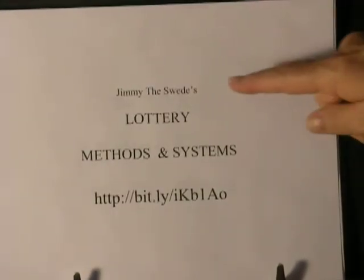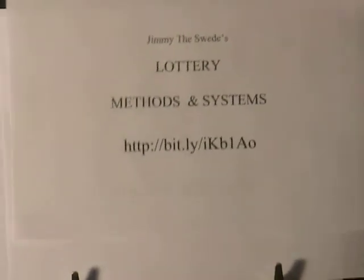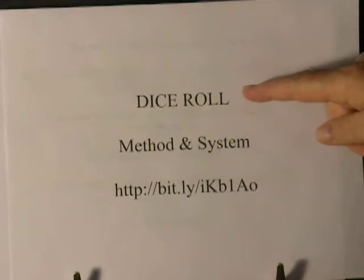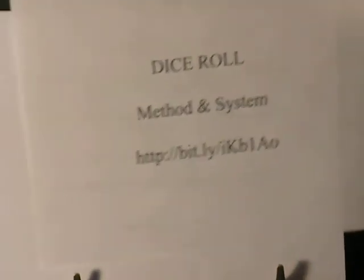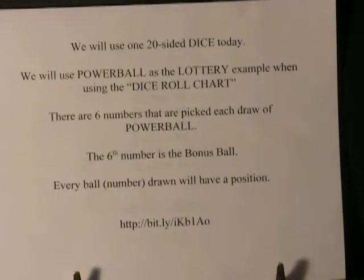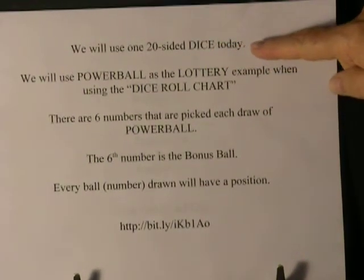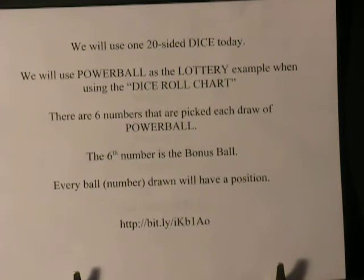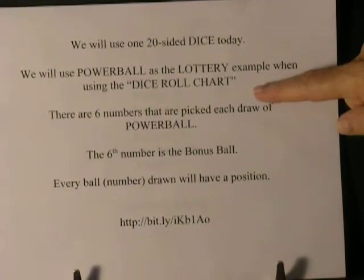This is Jimmy the Swede's Lottery Methods and System. We're using the dice roll method and system. We will use one 20-sided dice today. We will use Powerball as the lottery example when using the dice roll chart.